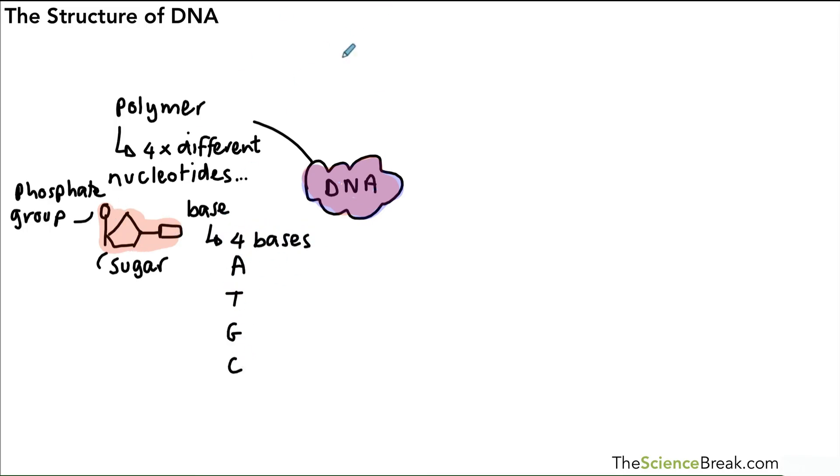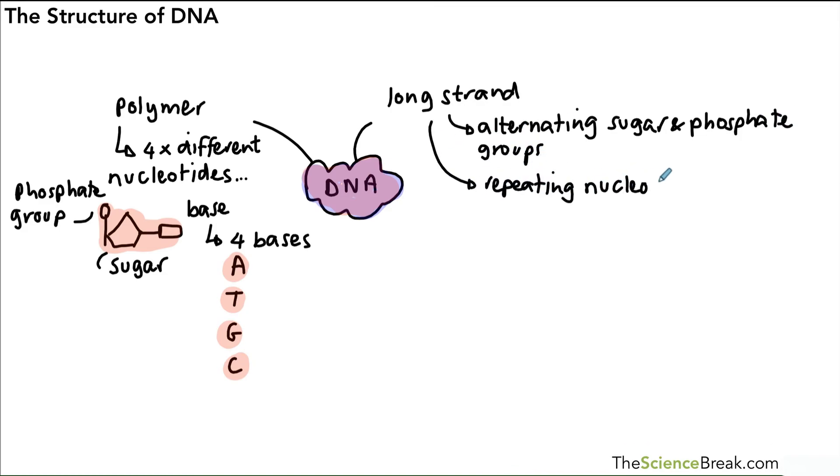They are A, T, G, and C. We can use those abbreviations; we don't need the full names. The DNA is a long strand. We can describe it as a long strand of alternating sugar and phosphate groups. If you look down one of the sides, you'll see sugar, phosphate, sugar, phosphate. And we can also describe it as repeating nucleotide units.